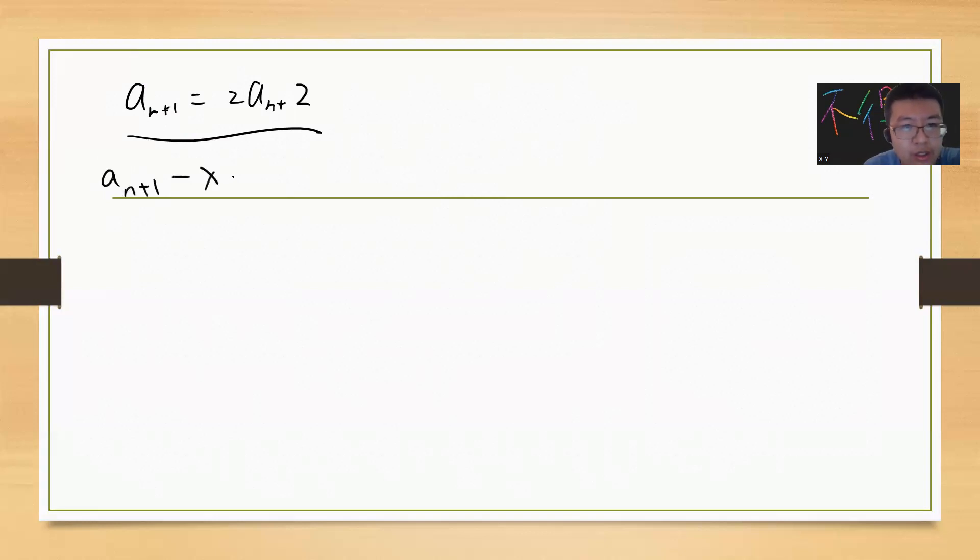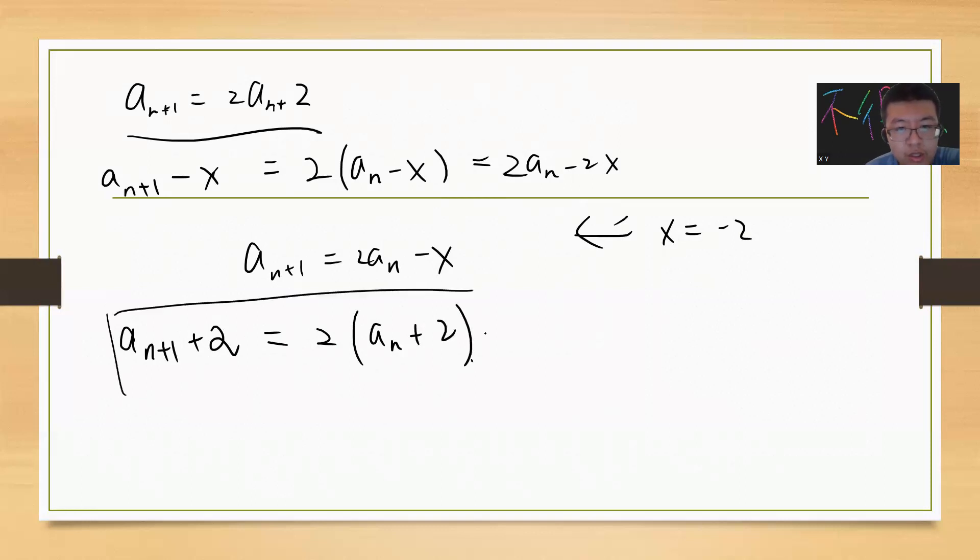The idea is I want to find x such that a_{n+1} + x = 2(a_n + x). This gives you 2a_n - 2x. From this, you get a_{n+1} = 2a_n - x, so x = -2. You can write the equation as a_{n+1} + 2 = 2(a_n + 2).